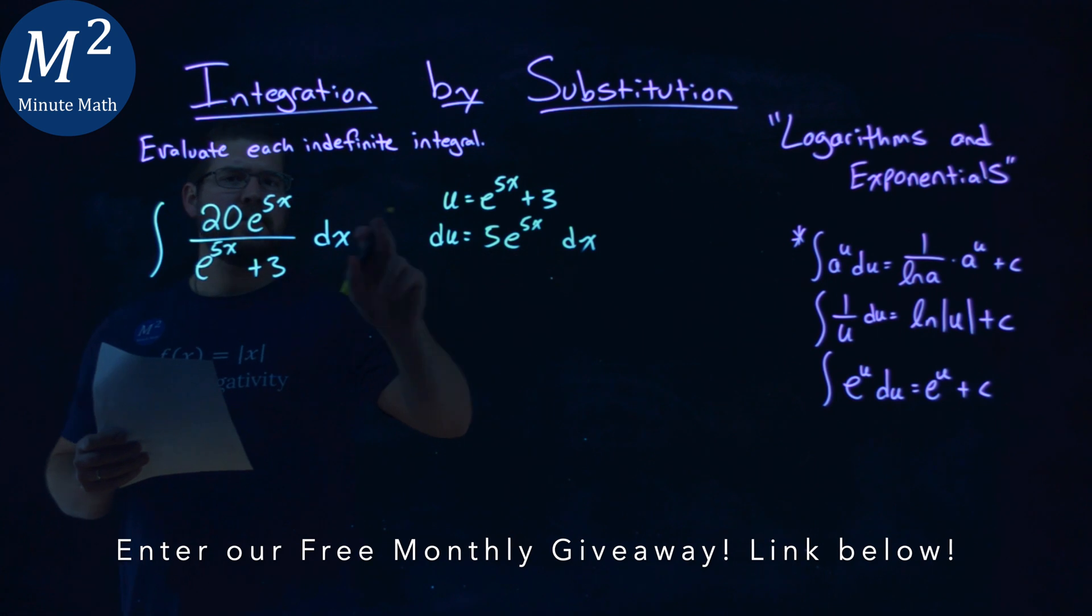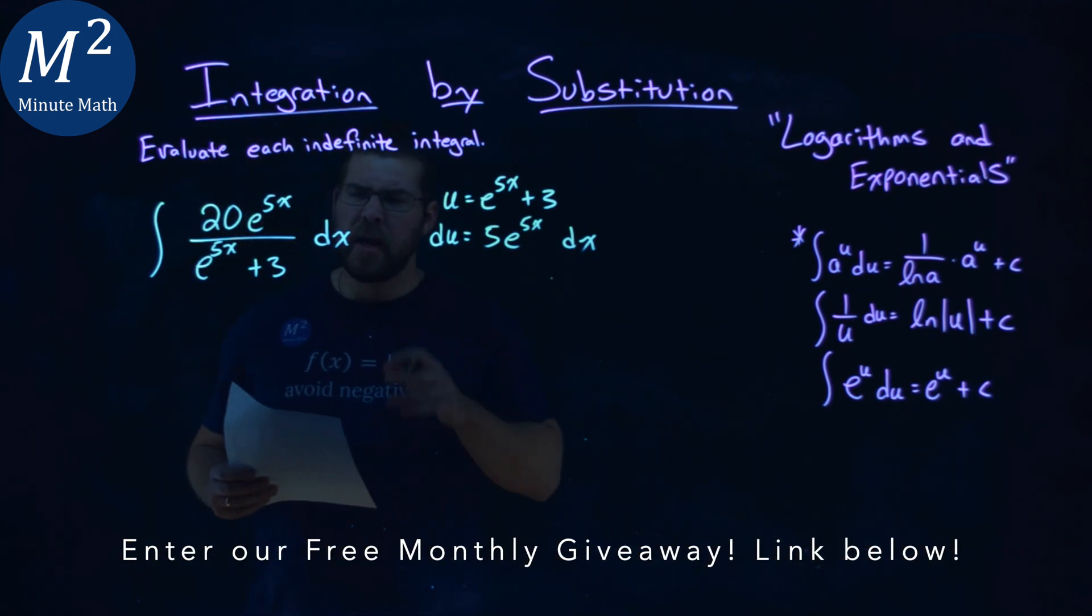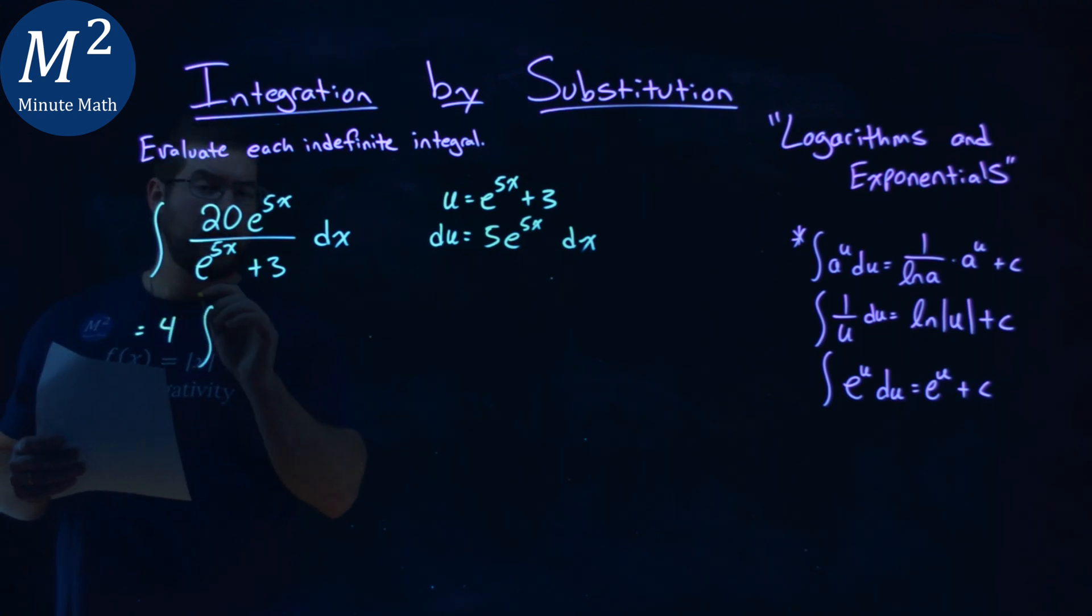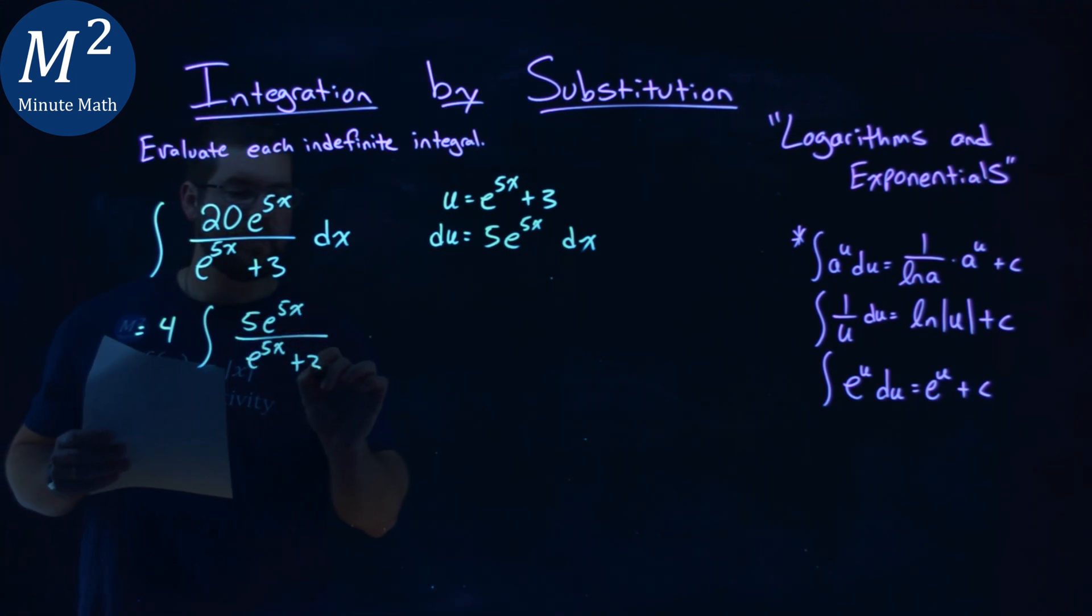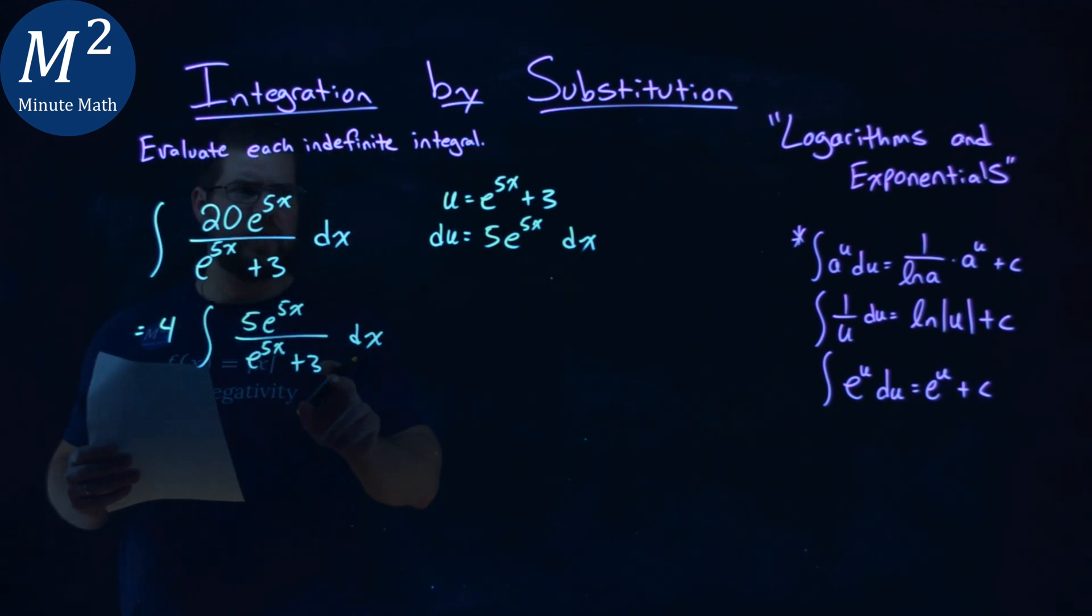Now we're very close there to our numerator, except there's a 20 and then there's a 5. If I pull out a 4 from the 20, the constant, I'm left with 5e to the 5x over e to the 5x plus 3 dx is my du.